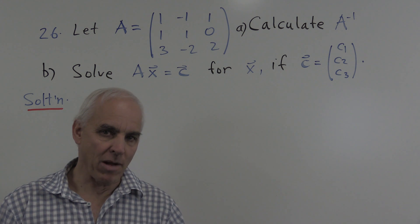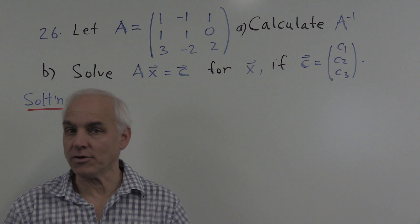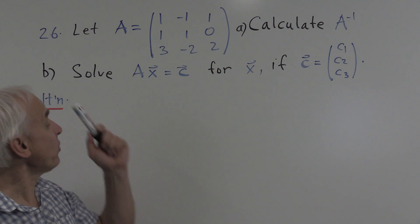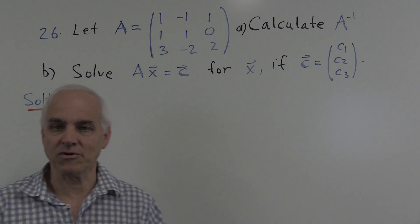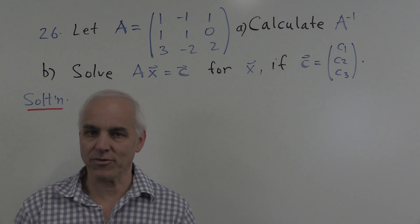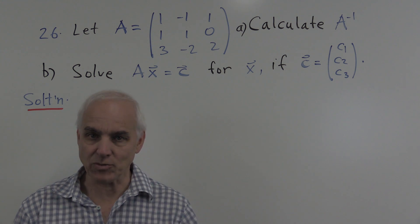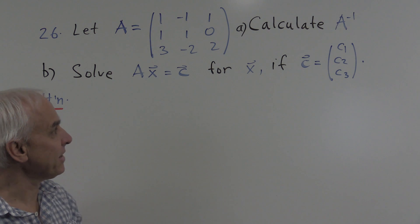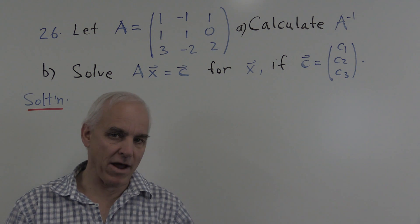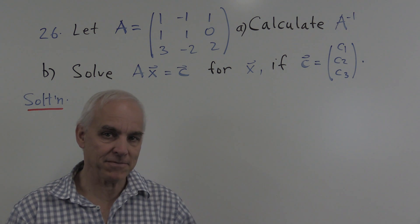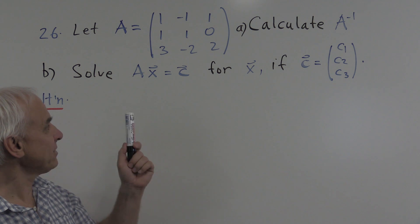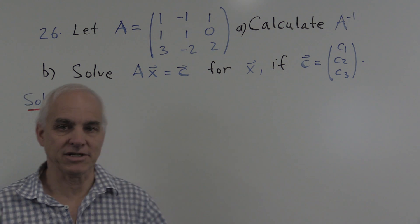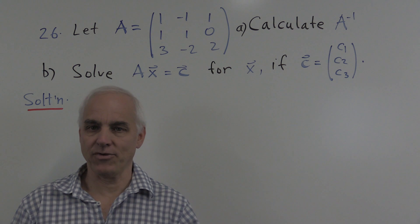Hello, I'm Norman Weilberger and we're here at the University of New South Wales. This is problem 26 of chapter 5 of Math 1131 linear algebra. We're asked to find the inverse of this 3 by 3 matrix A, and use that to solve this linear system Ax equals C.